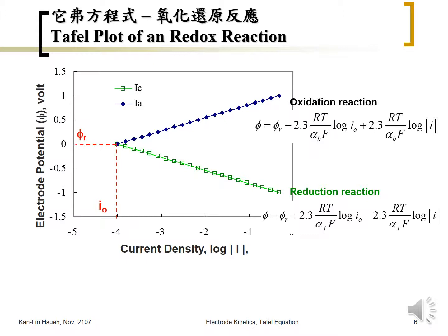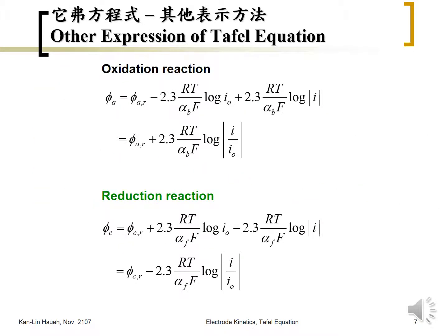There are some other expressions of the Tafel equation. You can put the two terms together — for the oxidation reaction or for the reduction reaction — and incorporate the exchange current density to get another expression for the Tafel equation.